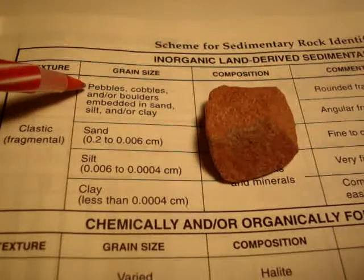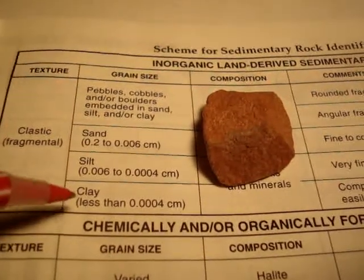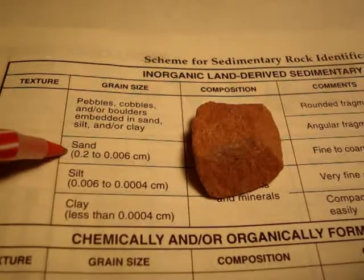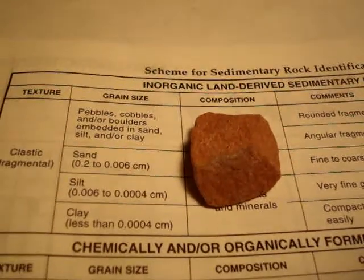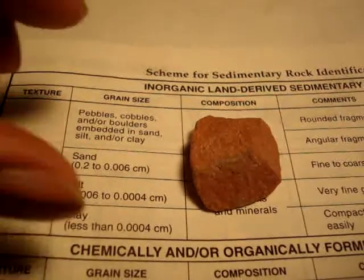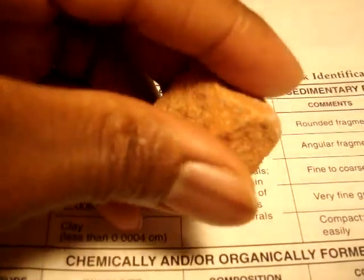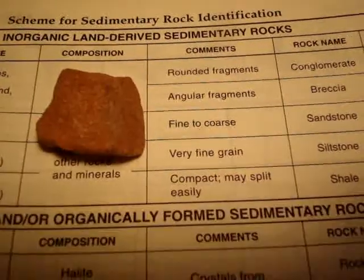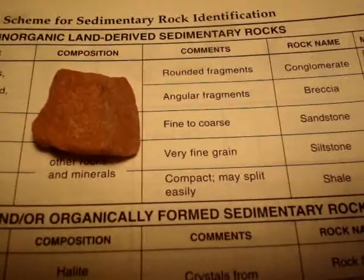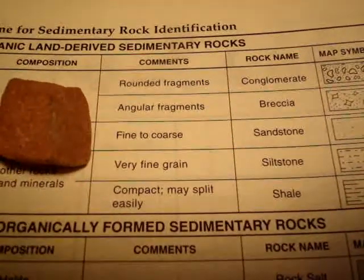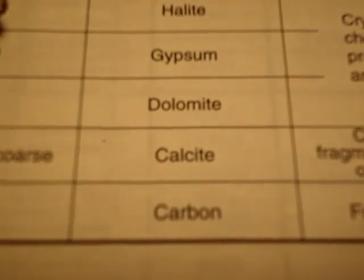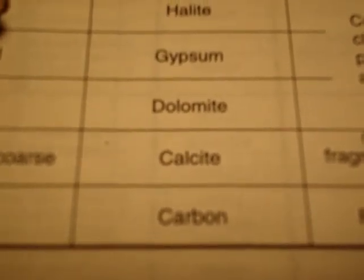Here we have our second example of a clastic sedimentary rock. It's not pebbles or cobbles — it's a bit larger than clay or silt, so it's more than likely sand. When you have lab, you'll be able to feel that this sedimentary rock has a sandy texture — it feels like sandpaper. Based on the comments, the texture can be fine to coarse, thus it is sandstone. Note that acid will react with calcite, which is how we know we have a limestone in other cases.